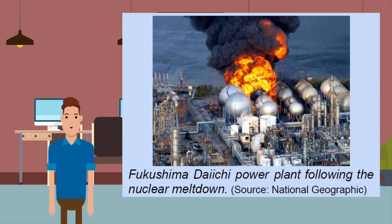Fukushima Daiichi Nuclear Power Plant was very badly damaged. The plant suffered nuclear meltdowns and explosions causing radioactive contamination in the area and a mass evacuation. Four years later, people were still not allowed to return to the area surrounding the power plant.